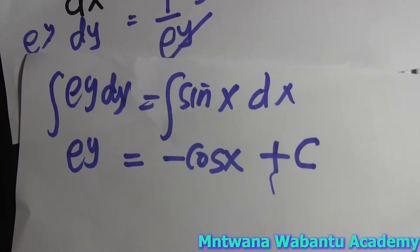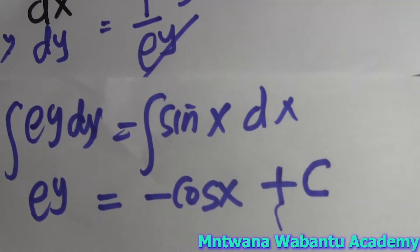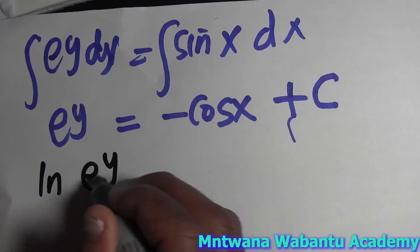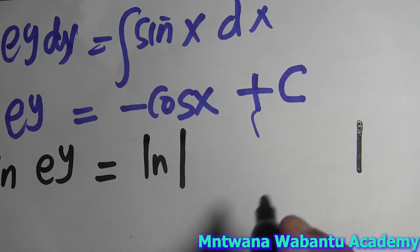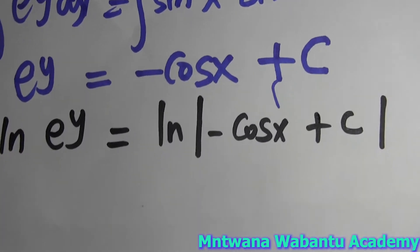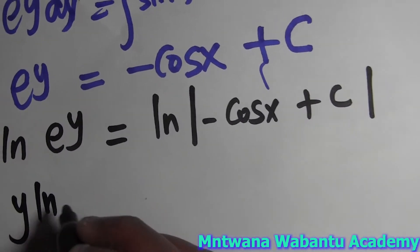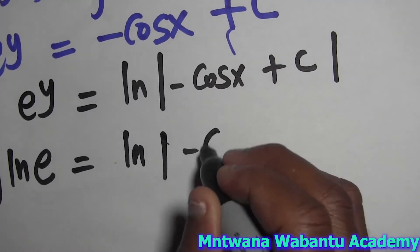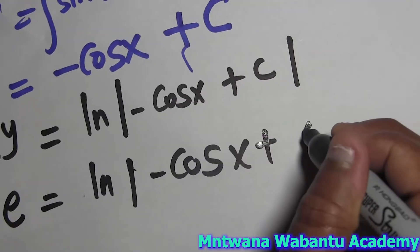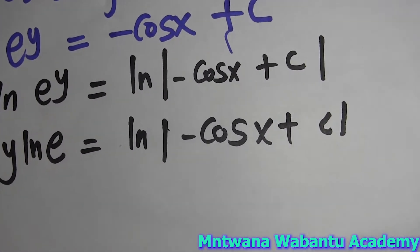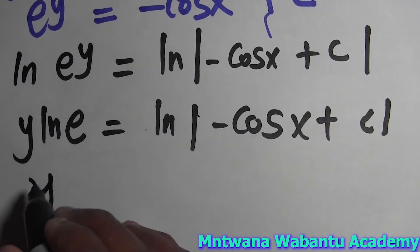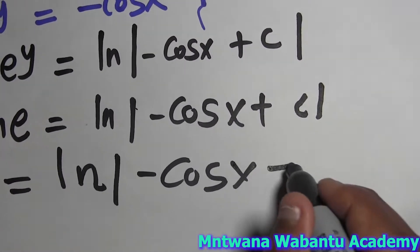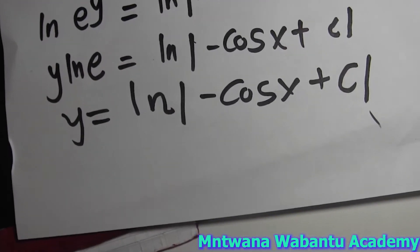Now we want to isolate y. To get y alone I have to apply ln throughout. So apply ln throughout - this gives me ln(e^y) equals ln of the absolute value of negative cos(x) plus C. Remember ln(e) equals one, so this term here equals one. It becomes y times one, which is just y. So y equals ln|negative cos(x) + C|.